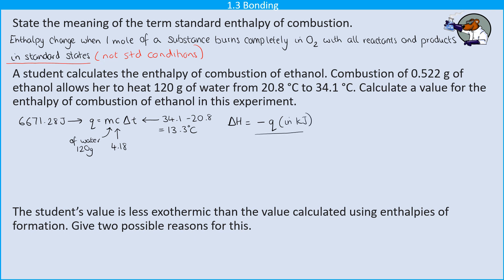And now I need to work out delta H. So this is going to be a negative value for Q in kilojoules divided by the number of moles. So my number of moles, I can work out by taking the mass this time of the fuel and dividing it by the MR. So here that's going to be 0.522 divided by the relative formula mass of ethanol. And that gives me a number of moles of 0.113478261.